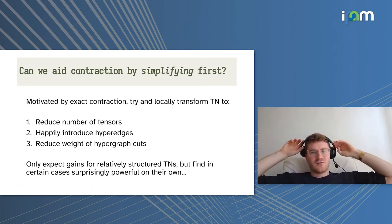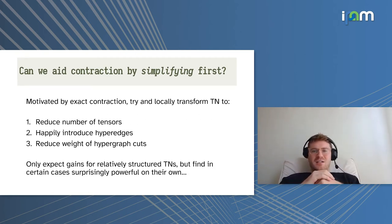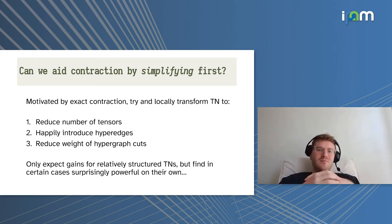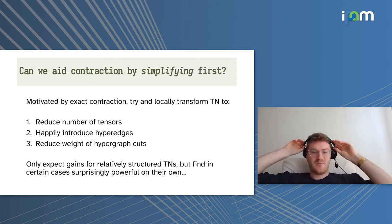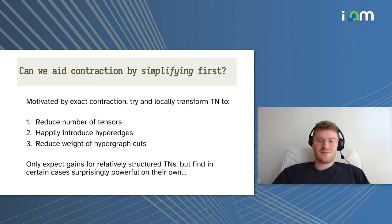But given what we know about the cost of the contraction, one question is, can we simplify the tensor network first? Motivated by what we know about exact contraction, can we try and perform some local transformations on the tensor network? The things that will help the cost, which we know is associated with bipartitioning the graph, are reducing the number of tensors, converting multiple edges into single hyperedges, and just generally reducing the weight of the average cuts across our hypergraph. We only really expect to do this for relatively structured tensor networks. But in certain cases, this is surprisingly powerful.